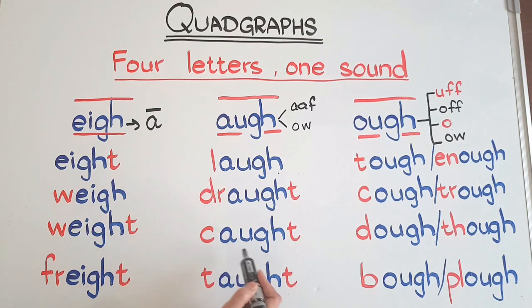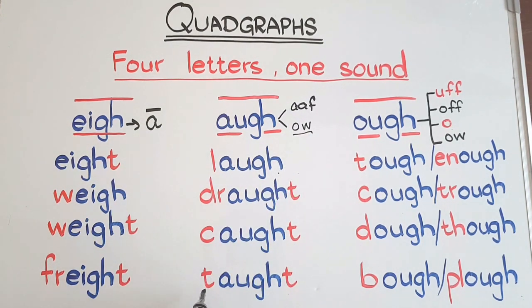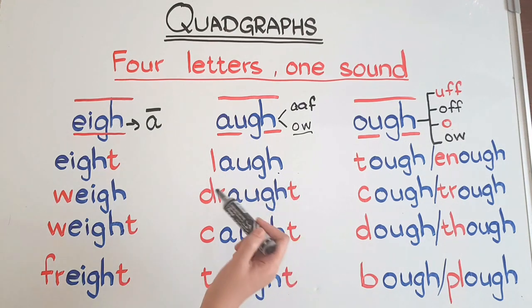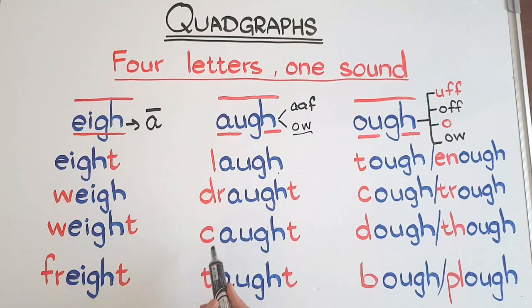Now A-U-G-H will give the 'aw' sound. Caught - c-aw-t. Taught - t-aw-t. Let me repeat: laugh, draught, caught, taught.